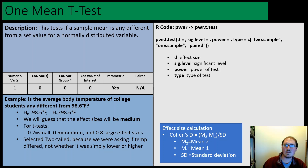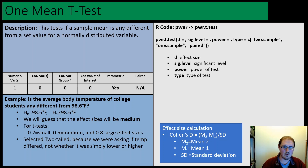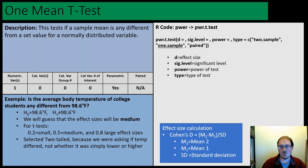Let's start with the one-sample t-test. This tests if a sample mean is any different from a constant or set value, like asking the question: is the average body temperature of college students any different from 98.6 degrees?